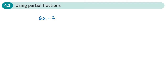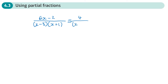Let's say we've got a question where part A asks us to write an algebraic fraction as partial fractions. Using the methods from chapter one, we can write it as four over (x minus 3) plus two over (x plus 1).